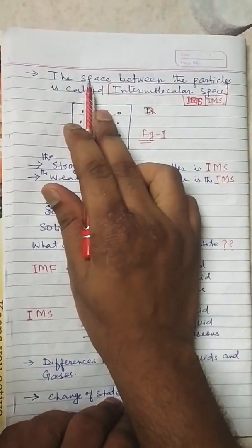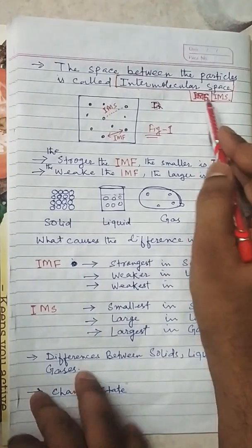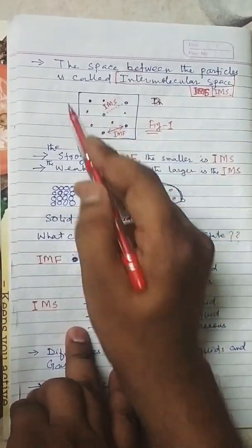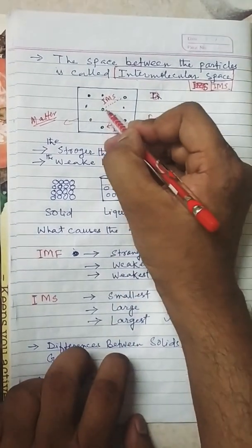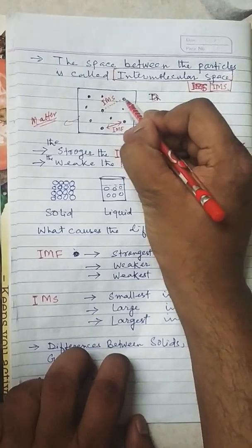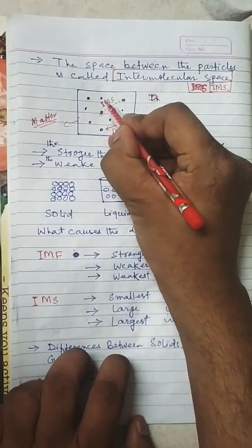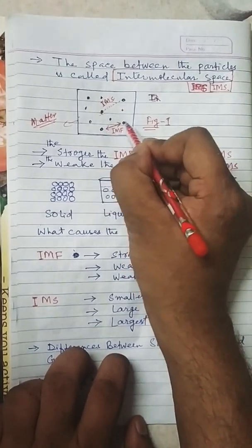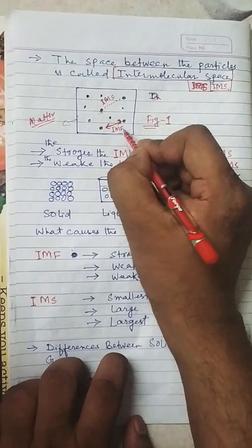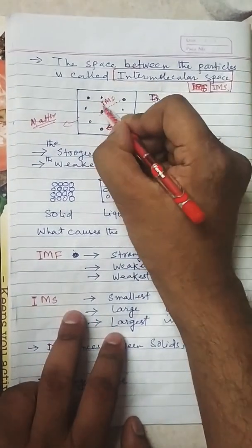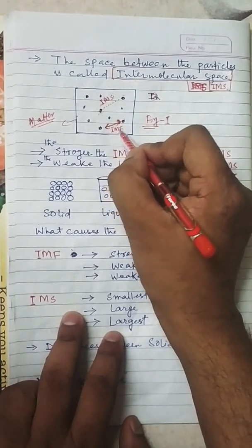The space between the particles is called intermolecular space. These are the molecules of matter arranged here — so the gap, the space between the two molecules, is called intermolecular space. These two molecules attract each other towards itself, so the force of attraction between two molecules is called intermolecular force of attraction. IMS means intermolecular space — the gap between two molecules.